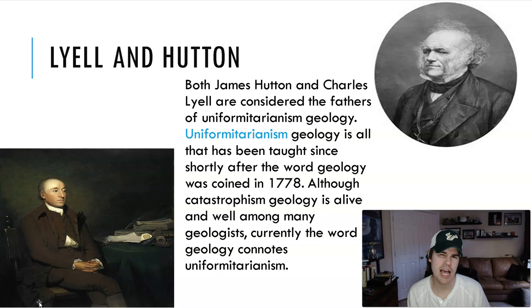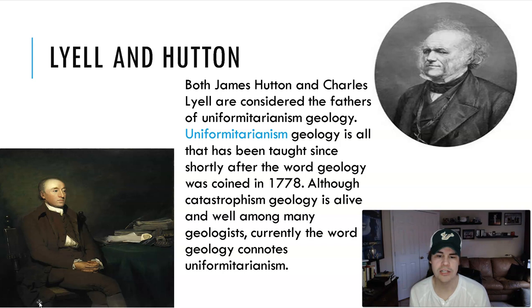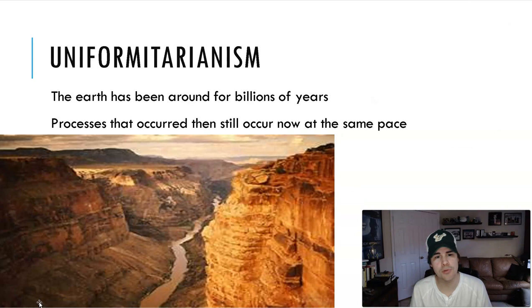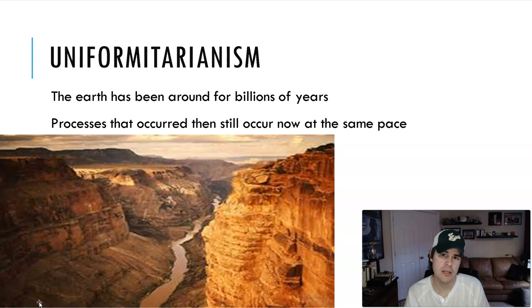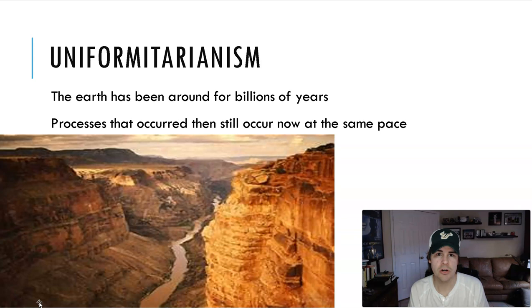They came up with uniformitarianism — that's a fun word to say. Uniformitarianism is the belief that the processes we see today, like the rates of water, radiation, and movement of the continents, have been consistent throughout Earth's history — the earth has been around for billions of years. Catastrophism, on the other hand, argues the rates have changed. Some Christians argue rates changed during creation or during the flood.